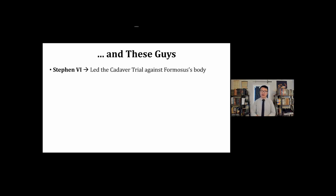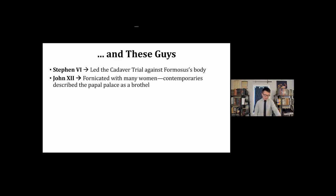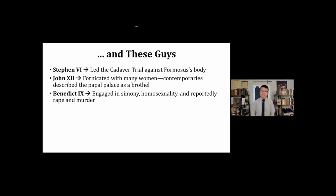Stephen VI is famous for leading the cadaver trial against his predecessor Formosus — he had Formosus's body exhumed, held a trial against him, had his fingers cut off, and desecrated the body itself. John XII, according to his contemporaries and even successor popes, fornicated with many women openly. His contemporaries described the papal palace as a brothel due to his sexual immorality. Benedict IX engaged in simony — the sale of church offices — and most scholars believe he was openly homosexual, with some historians also charging him with rape and murder, though those claims are difficult to verify.